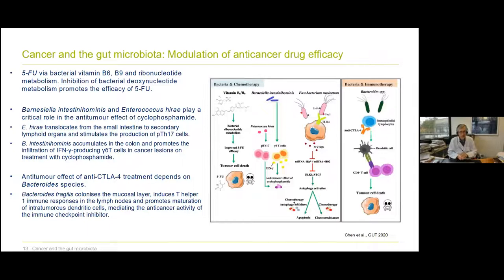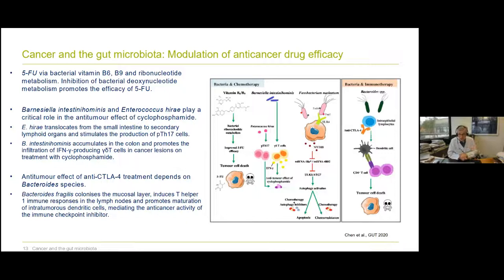When we think about how microbiota change treatment, there are several ways. For example, 5-FU is affected by bacterial vitamin B6, B9, and ribonucleotide metabolism — the microbiota can actually degrade 5-FU so that it's not efficacious. On the other hand, cyclophosphamide efficacy is critically dependent on two bacteria, Lactobacillus and Enterococcus hirae — without those, cyclophosphamide doesn't work. Even immunotherapy depends on bacterial species that colonize the mucosal layer and induce T-helper cell immune responses, thereby supporting treatment efficacy. Microbiota play a huge role in the efficacy of chemotherapy, affecting it either positively or negatively.